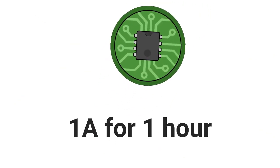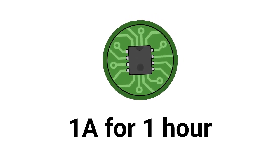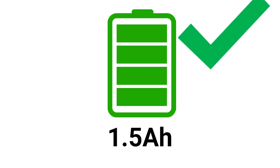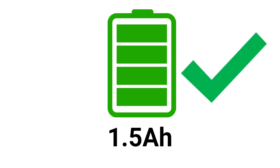For example, if your circuit requires 1A for an hour, you should choose a battery with a capacity of 1.5Ah in order to ensure long-lasting battery life and optimum performance.